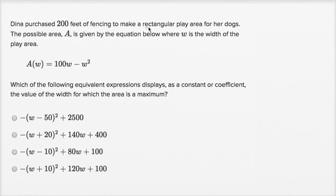Dinah purchased 200 feet of fencing to make a rectangular play area for her dogs. The possible area A is given by the equation below, where W is the width of the play area. Which of the following equivalent expressions displays as a constant or coefficient the value of the width for which the area is a maximum?